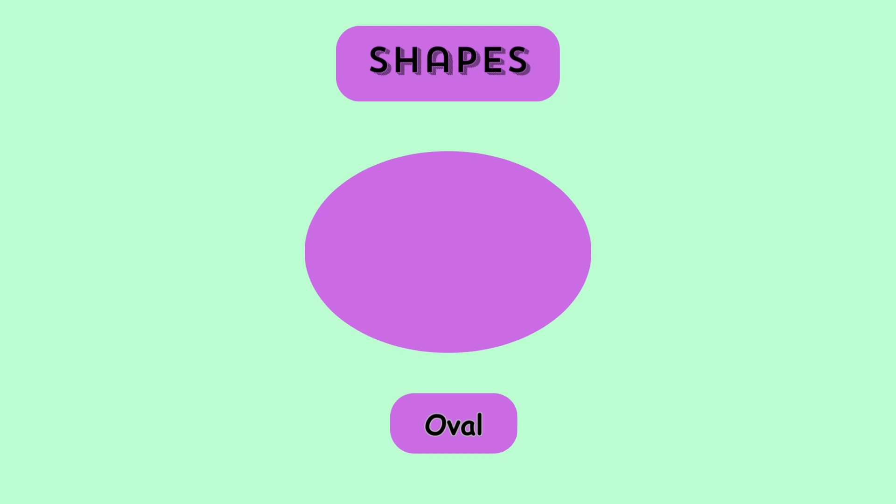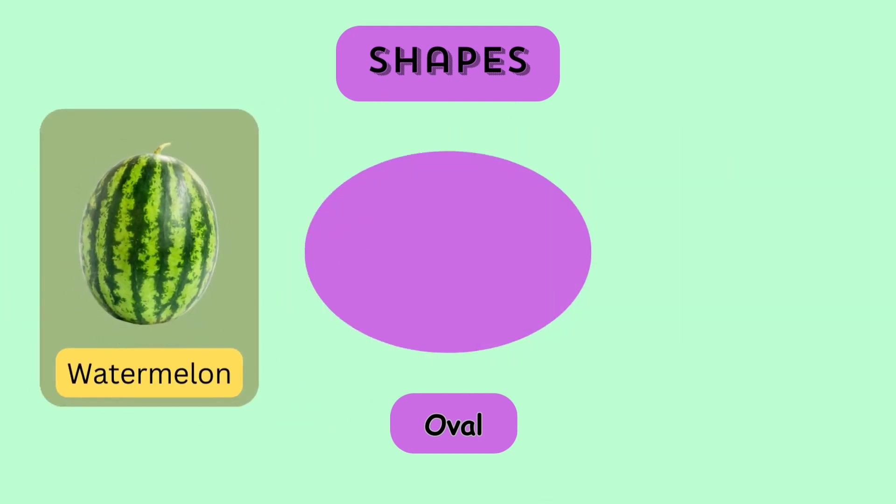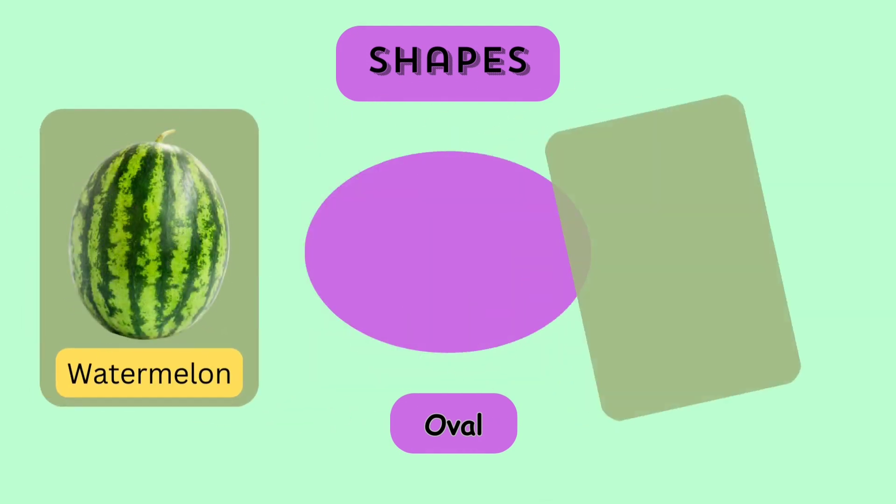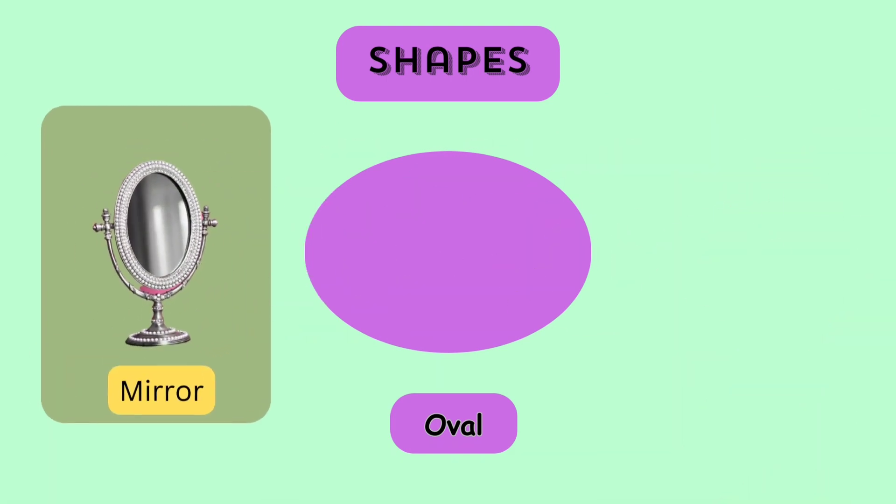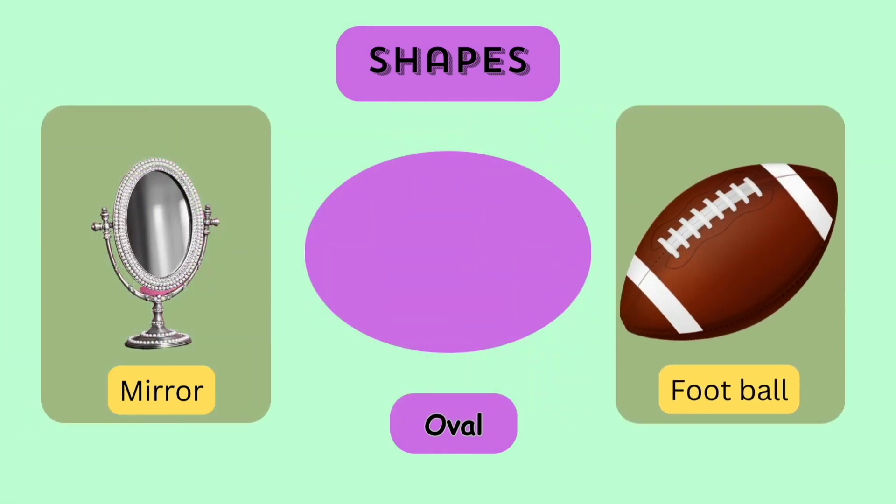Now, let's see the next shape. It is an oval. Can you find something else that looks like an oval? A watermelon. An egg. A mirror. And a football.